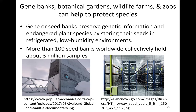Gene banks, botanical gardens, wildlife farms, and zoos can all help protect species. Gene or seed banks preserve genetic information and endangered plant species by storing seeds in refrigerated, low-humidity environments. More than 100 seed banks worldwide collectively hold about 3 million samples. Let's look into more details on this — here are photos from inside the USDA seed bank in northern Colorado.